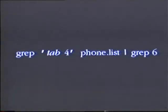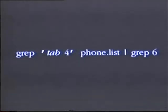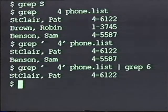By using two grep commands connected by a pipeline, you can search for two patterns in the list. For example, suppose I want to find phone numbers that begin with a 4 but also contain a 6 somewhere. To find those numbers that begin with a 4, I search for the pattern tab followed by a 4. The first command in the pipeline searches for phone numbers that begin with a 4. The second grep picks out only those that contain a 6. And as you see, we found the one line in the file whose phone number begins with a 4 and contains a 6.